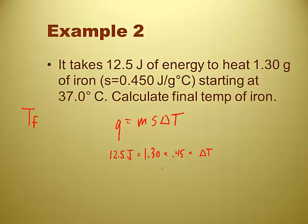As, well, this is iron, so we just learned in the last example that it's 0.45 and we can find delta t here.